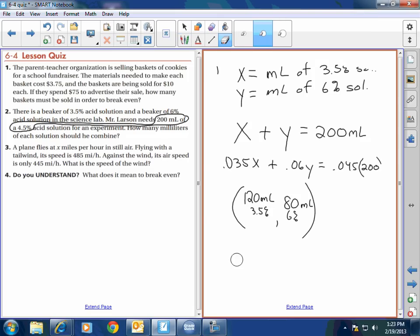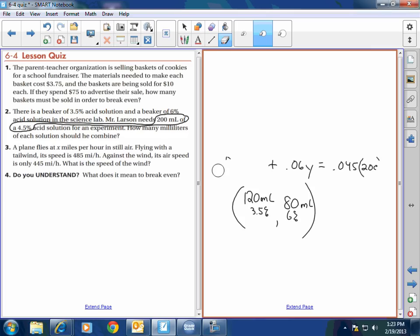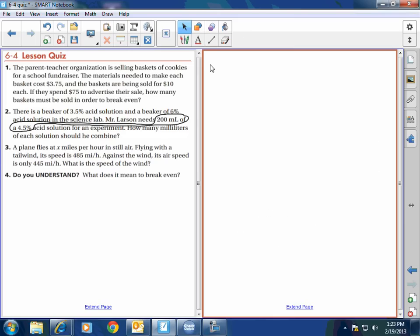Okay. Boy, I'm running out of time here. Let me do this last one right quick. For number three, a plane flies at X miles per hour in still air. That means that when the air is just nice and still, there's no wind in front of him or any wind in back of him, that's still air. Okay? We talked about this as well in one of our examples last week.